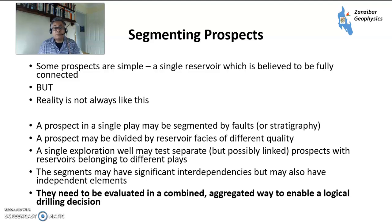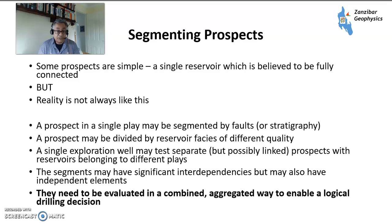So why segment prospects? Some prospects are really simple — you've got a single reservoir believed to be fully connected, less things to worry about. But reality is not always like this. You can have a prospect in a single play that may be segmented by faults, or divided into different reservoir facies of different quality that you have to analyse together. You may also have an exploration well which tests separate prospects that may or may not be linked, belonging to different plays. These segments may have significant dependencies but we also have independent elements, and we need to understand what's going on to make a good analysis.